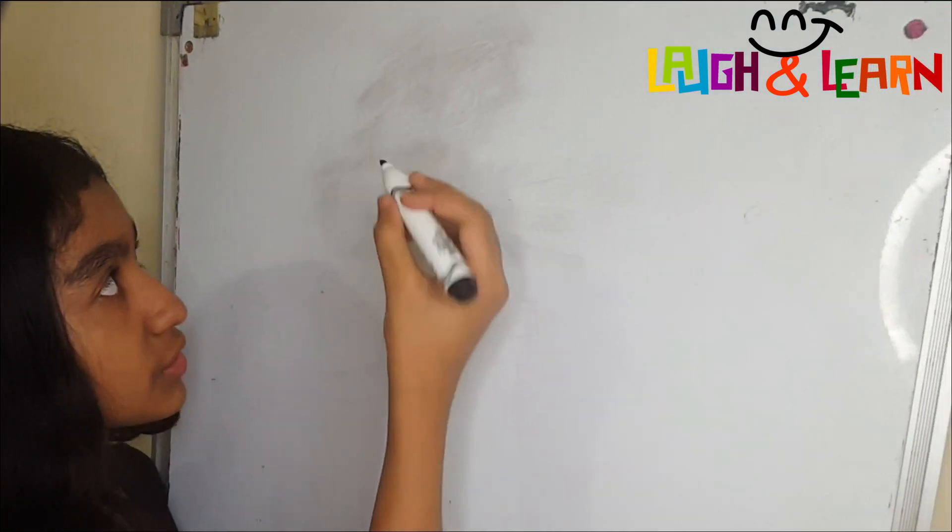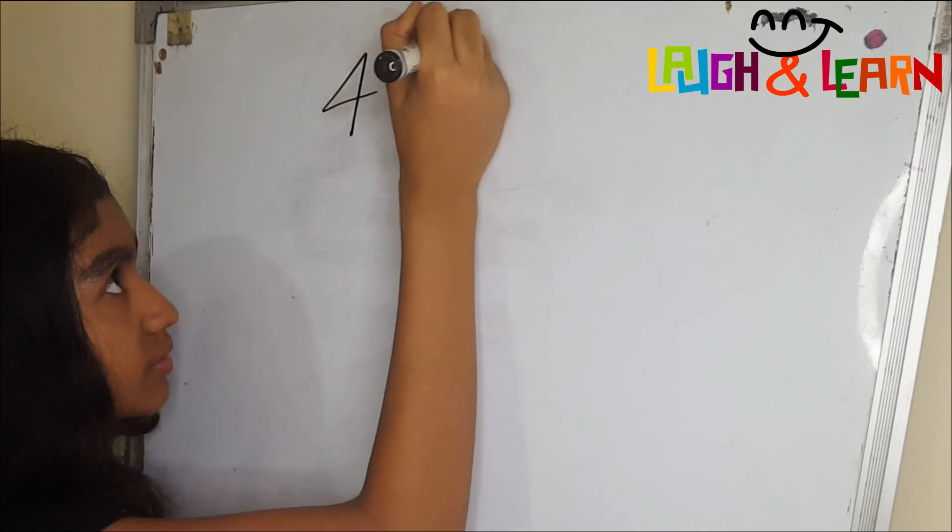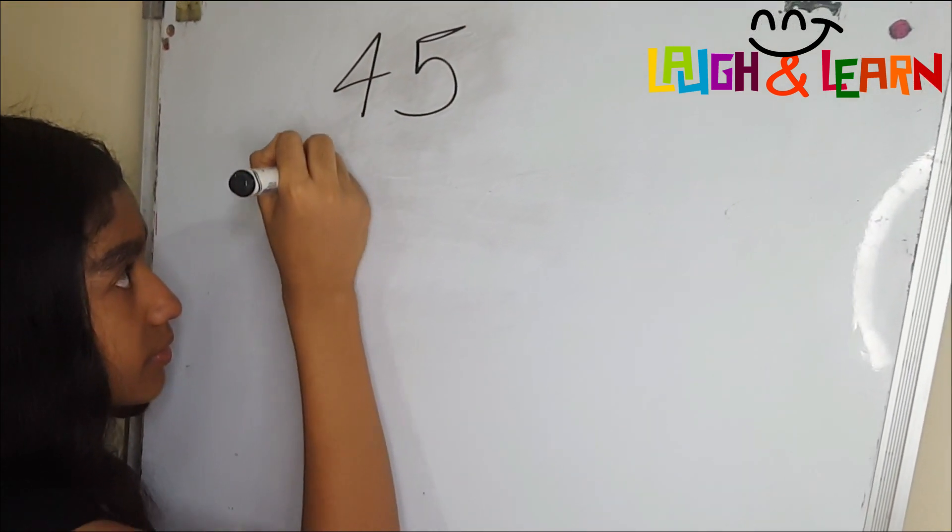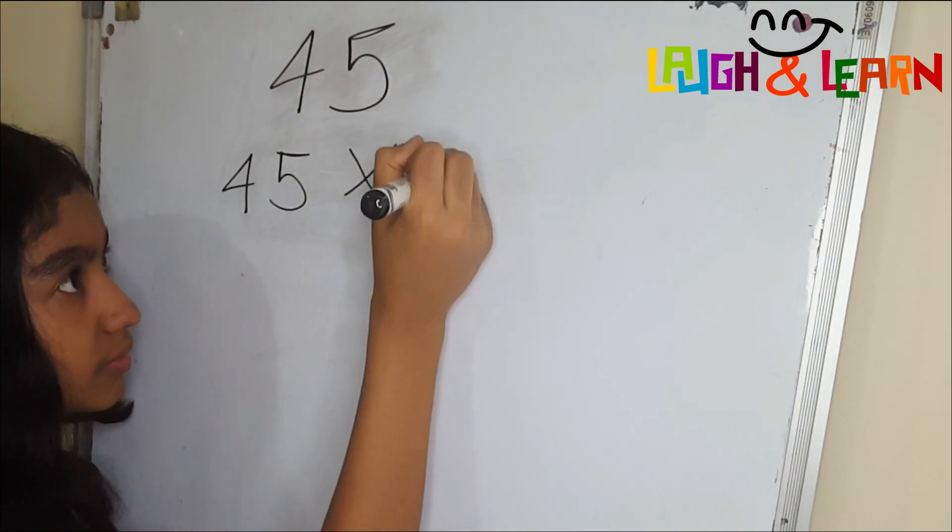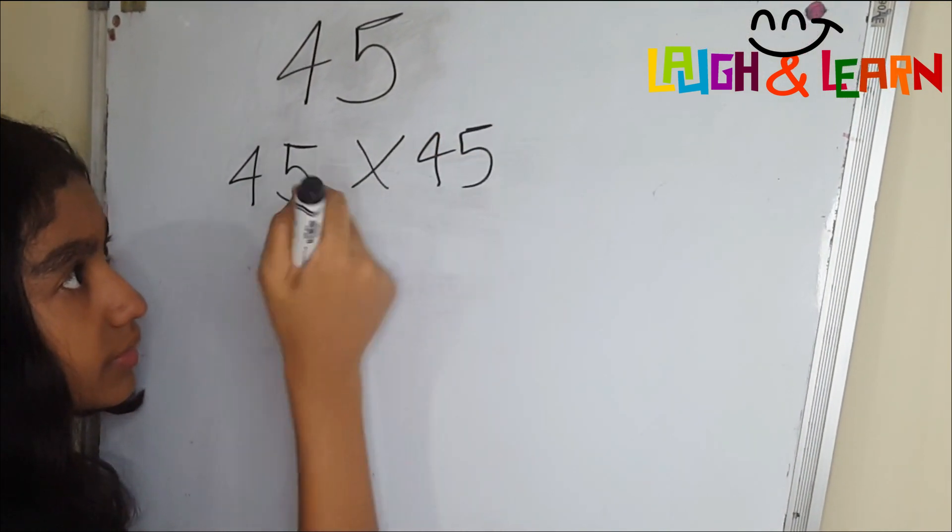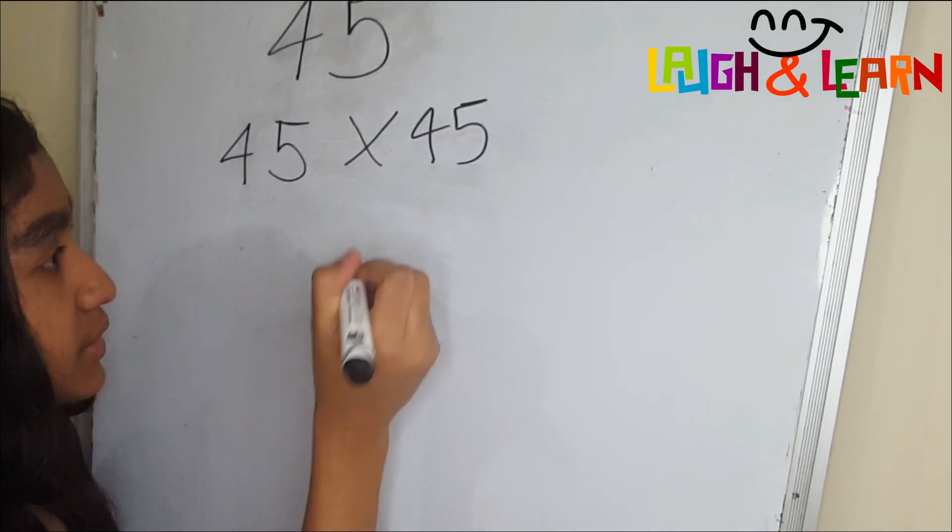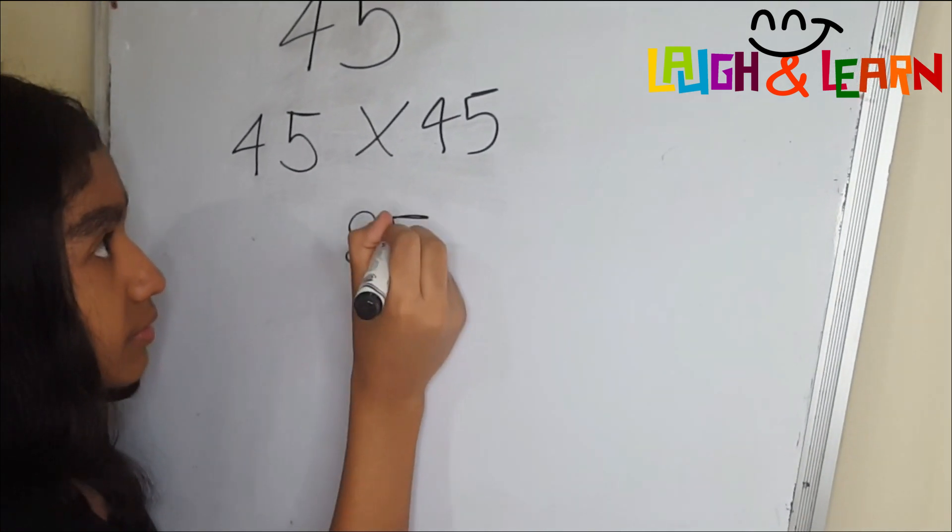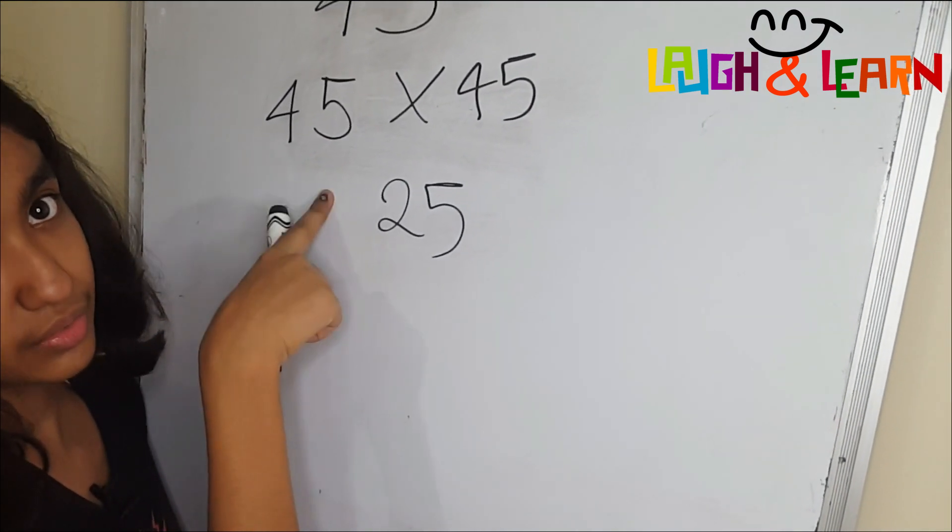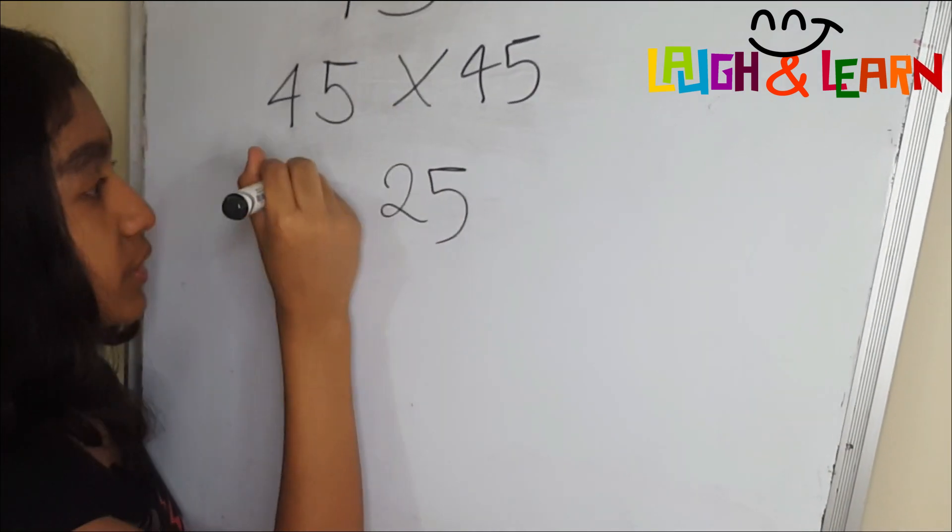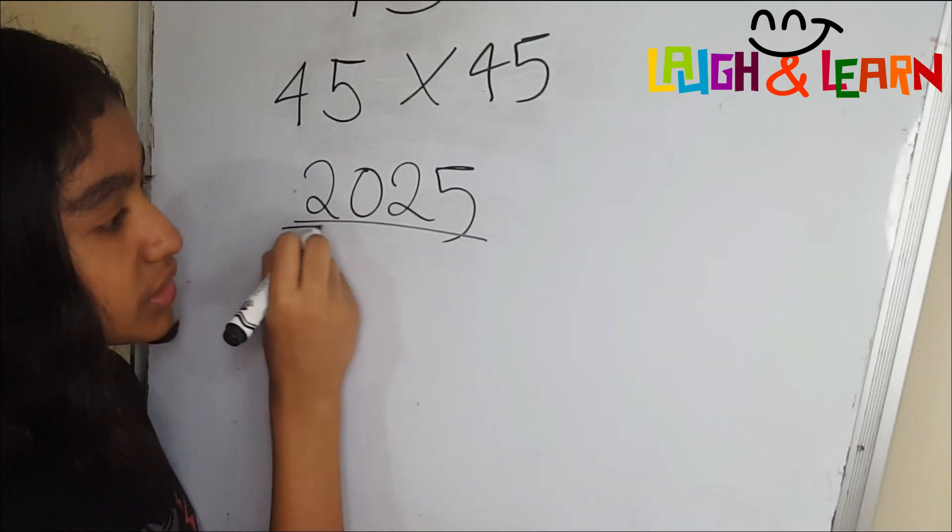So let's do 45. 45 times 45. As I said, 5 times 5, then the next number, the number after 4 is 5. 5 times 4 equals to 20...25. This is the answer.